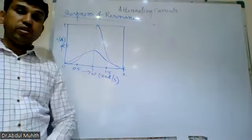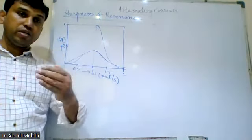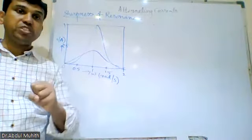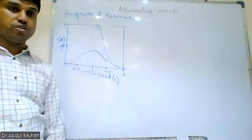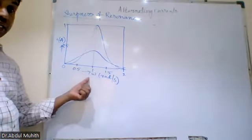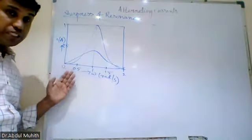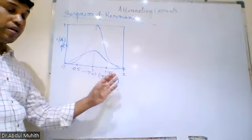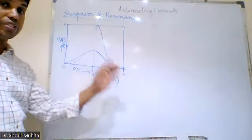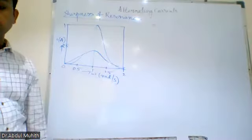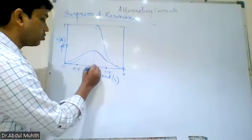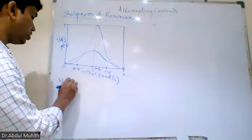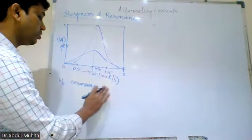Because of resonance, we are able to listen to songs on the radio. The frequency from the radio station and the frequency of the circuit in the radio — if both frequencies match, resonance takes place and you can hear the song. On a graph with angular frequency on the x-axis and current on the y-axis, as frequency increases, current reaches a maximum and then decreases. That particular frequency is known as the resonance frequency, denoted omega naught (ω₀).